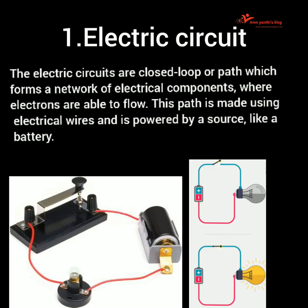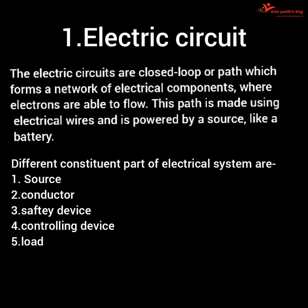An electric circuit is a closed path composed of variable components through which electric current completes its path. The different constituent parts of an electrical system are: Source, Conductor, Safety Device, Controlling Device, and Load.